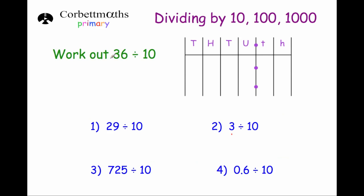Our next question is to divide a number that doesn't end in zero, such as 36 by 10. I'm going to write 36 into a place value table with thousands, hundreds, tens, units, tenths and hundredths. Dividing 36 by 10 means each digit gets 10 times smaller, so each digit moves one column to the right. The 3 moves from tens to units, and the 6 moves from units to tenths. So 36 divided by 10 is 3.6. Similarly, 29 divided by 10 gives 2.9, as the digits move one column to the right.